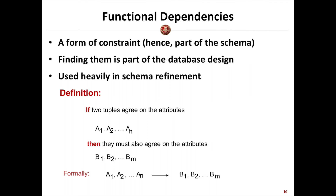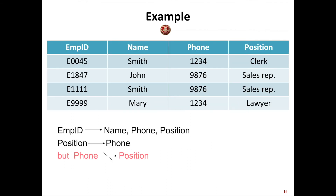Functional dependencies can be found based on physical meanings. For example, consider a relation about employees in a company covering employee ID, name, phone number, and position. Based on physical meaning, we know employee ID would be the key. If two tuples agree on the employee ID, they should also agree on name, phone number, and position. So we can derive the functional dependency: employee ID implies name, phone number, and position.